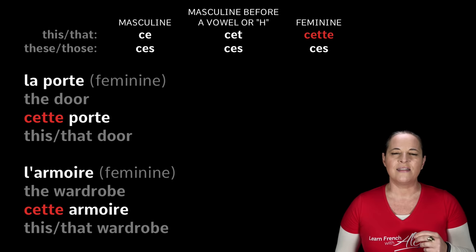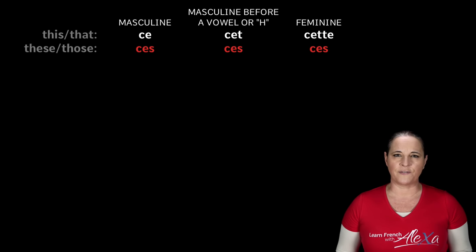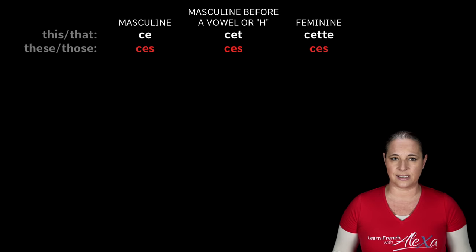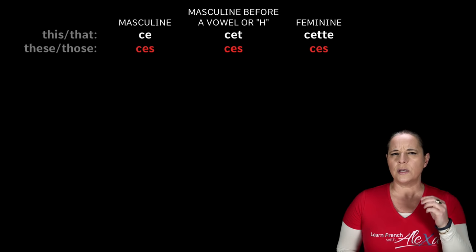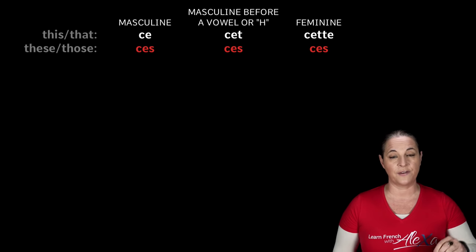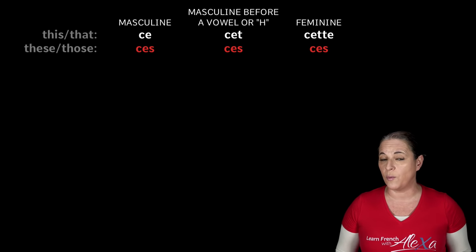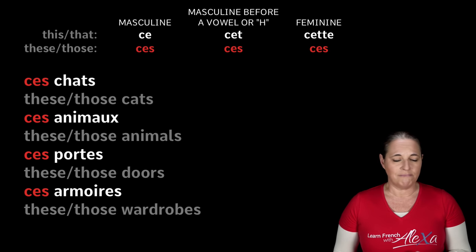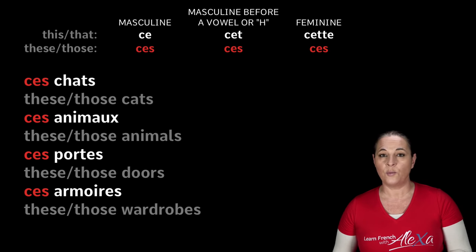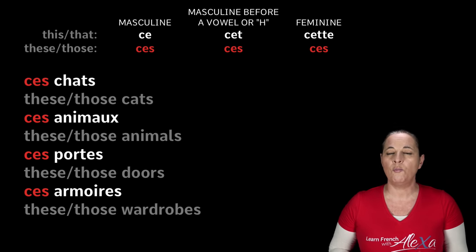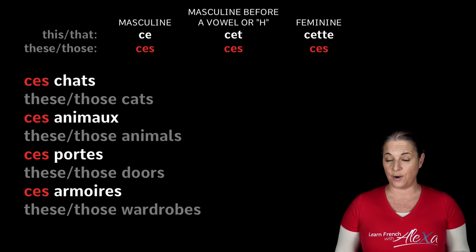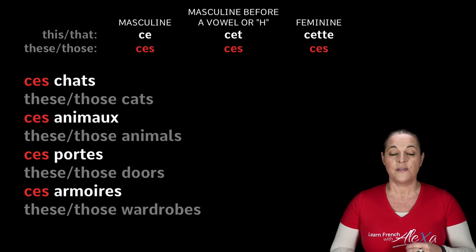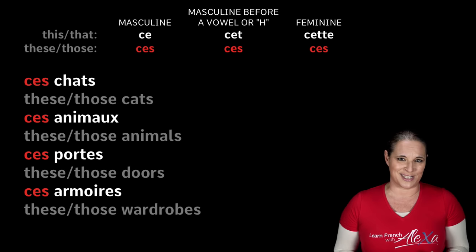When you want to say these and those, it's the same in French. We say ces, C-E-S, no matter what gender the word is. So always, when you want to use a demonstrative adjective and put a word in its plural form, quite simply: ces chats, ces portes, ces armoires. I'm using exactly the same word, not taking into consideration whether they are feminine or masculine — they're just plural.